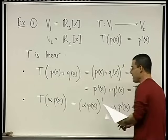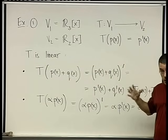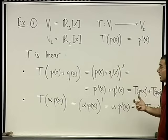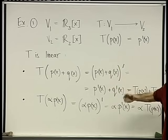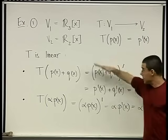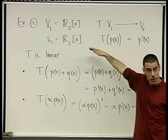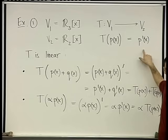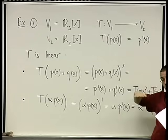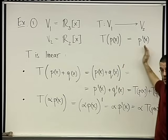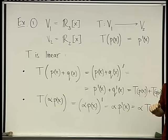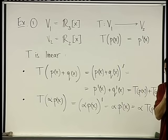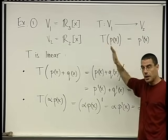We're refraining from calling T a function — although it is. It's a function between vector spaces, but we're calling it a map or a transformation precisely because V could be a space of functions. Polynomials are functions, T acts on functions, and the input and output are themselves functions. It's one level up. So to keep things less confusing, we call T a map, not a function.